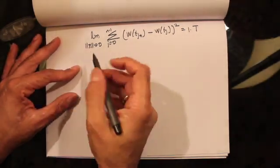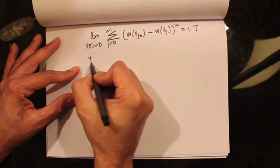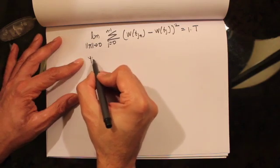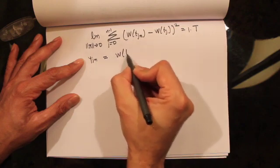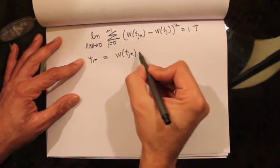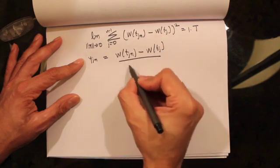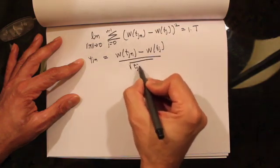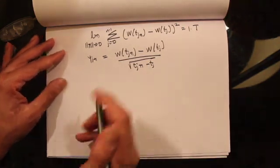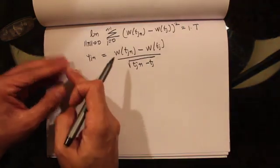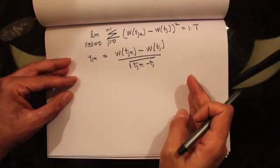Let's try to understand this better by defining a series of random variables. Define Y_{j+1} to be equal to W(t_{j+1}) minus W(t_j) divided by the square root of t_{j+1} minus t_j.